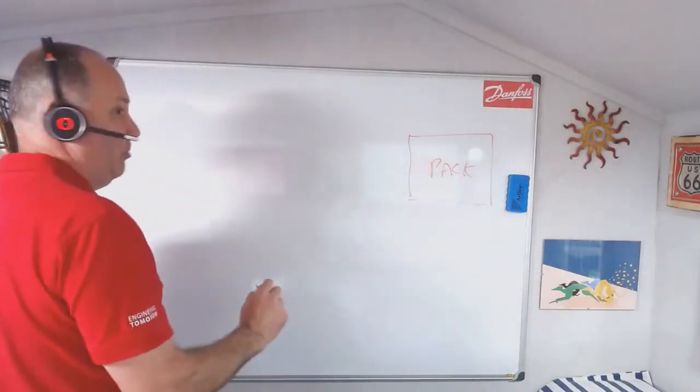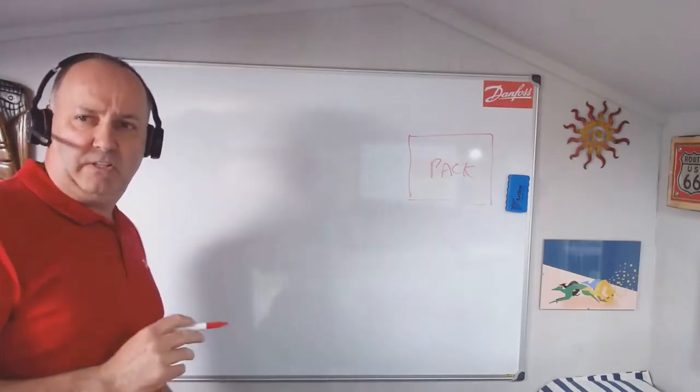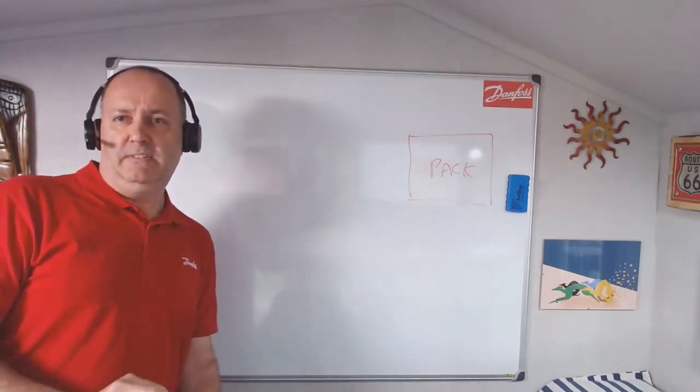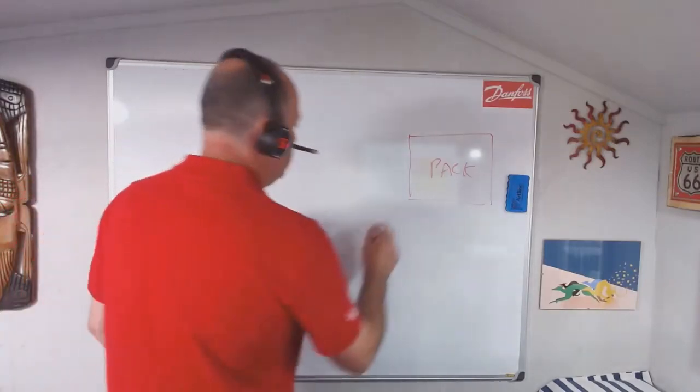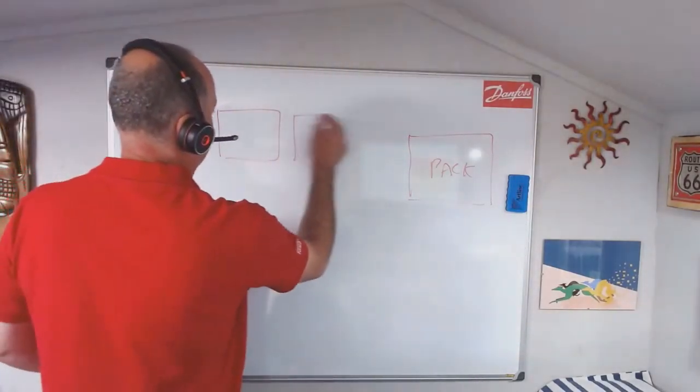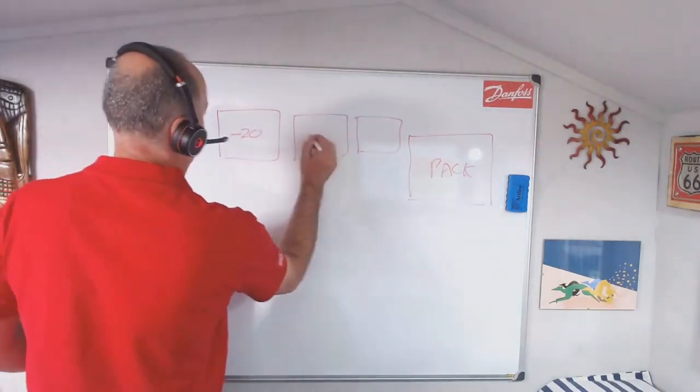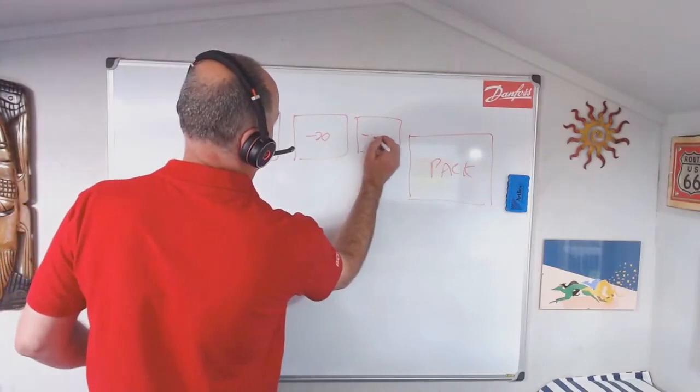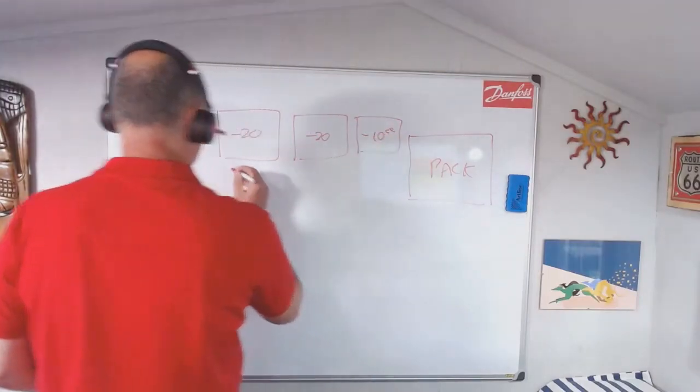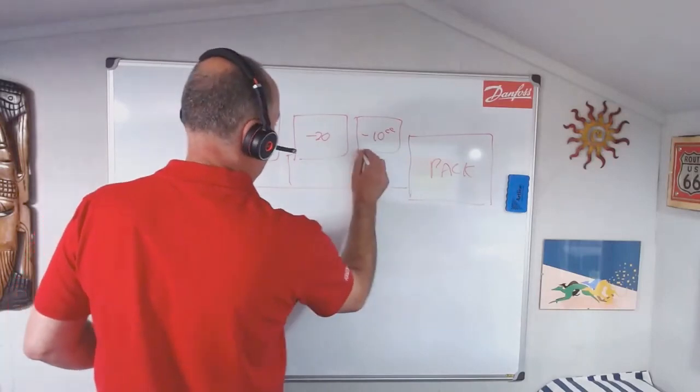So if we have our pack here, we can see that. Is that reading back to front on the right way around? Yeah, back to front. Never mind. So let's say we've got three evaporators and we've got minus 20, minus 20 and let's say minus 10. So we've got our common suction going back to our pack.